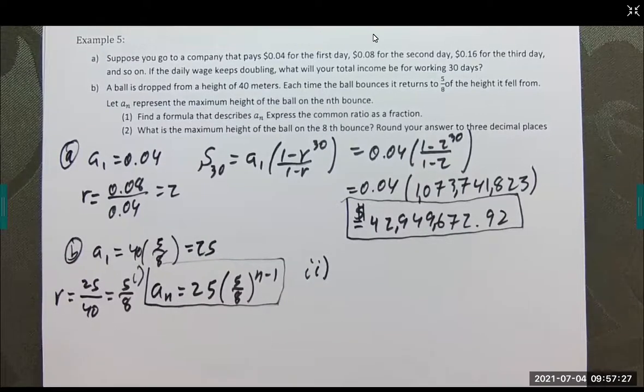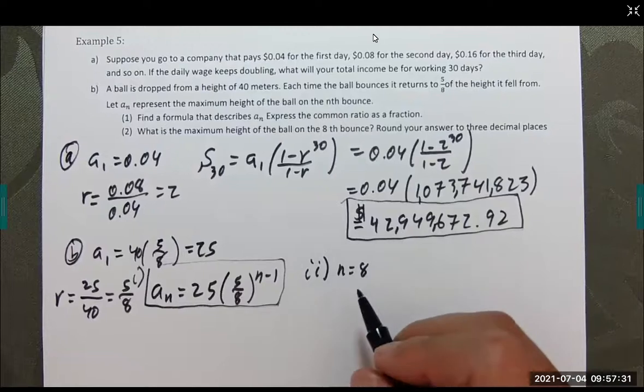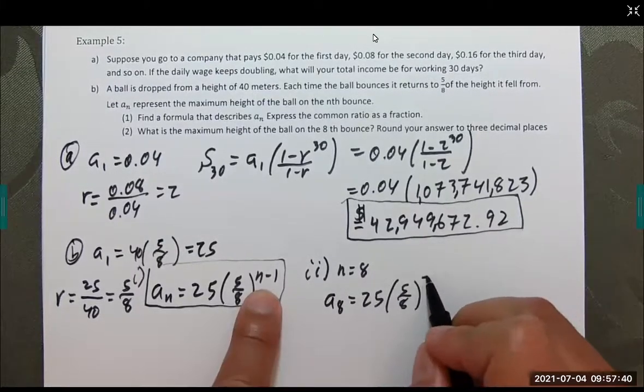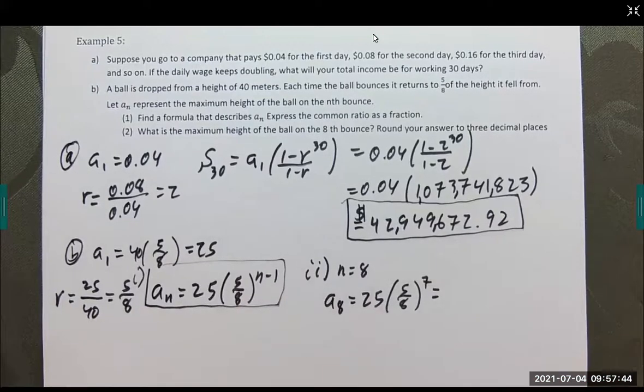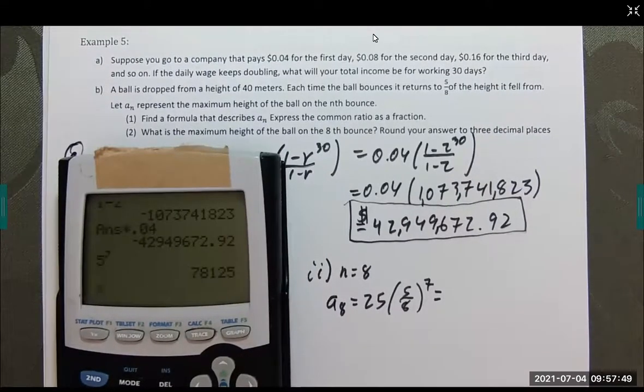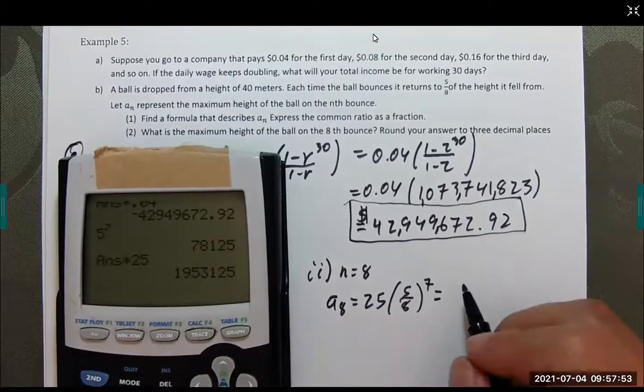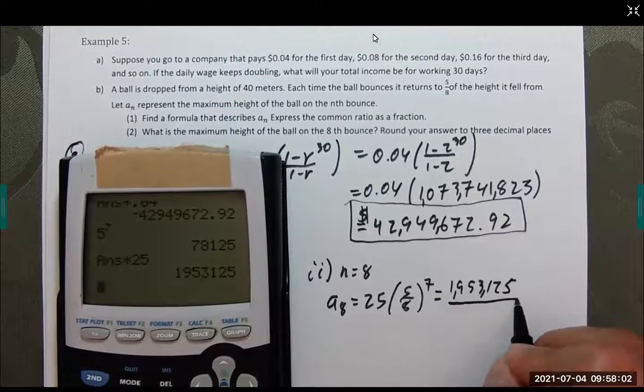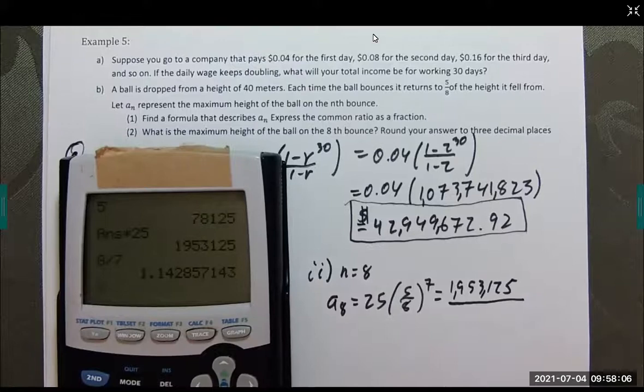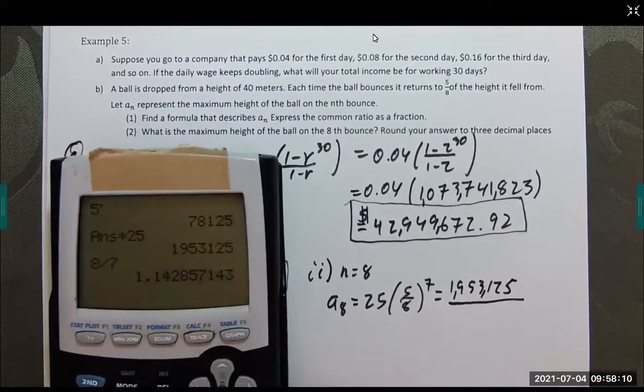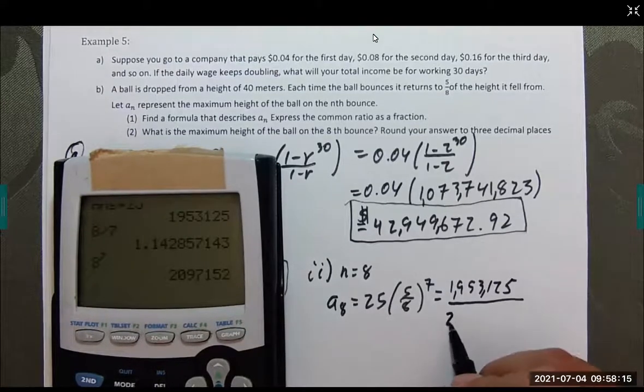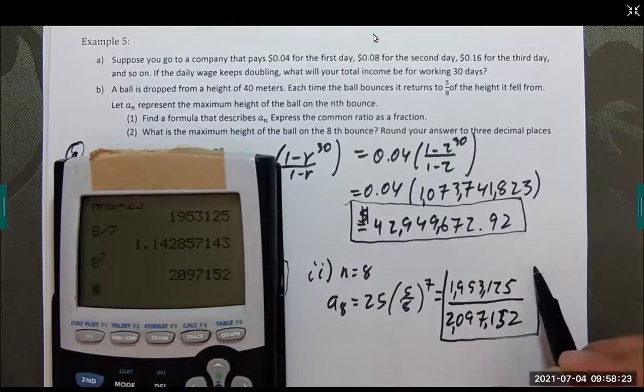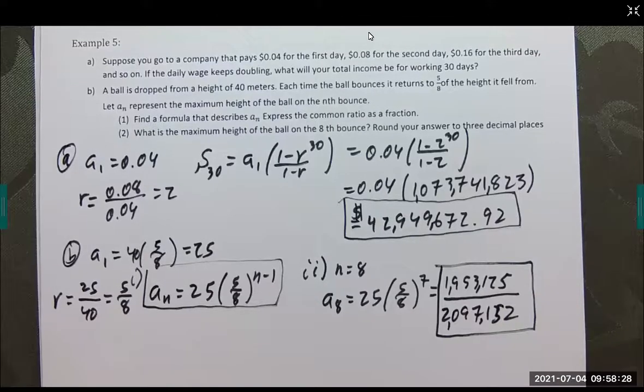Let's see what we get. The maximum height of the ball on the 8th bounce. So n equals 8. A sub 8 equals 25 times (5/8) raised to the 7th power. 5 to the 7th times 25 is 1,953,125. Divided by 8 to the 7th. 8 to the 7th is 2,097,152. That does not reduce. We could get a decimal approximation, but may as well stay as accurate as we can.